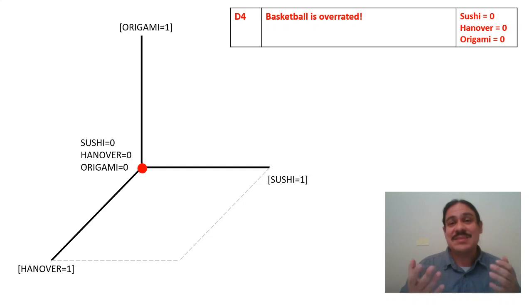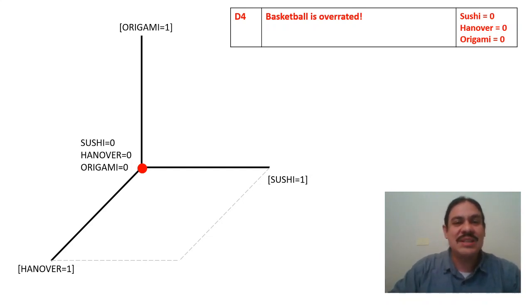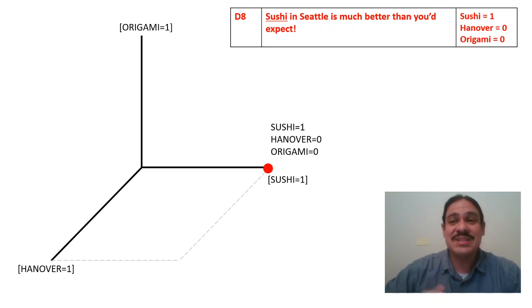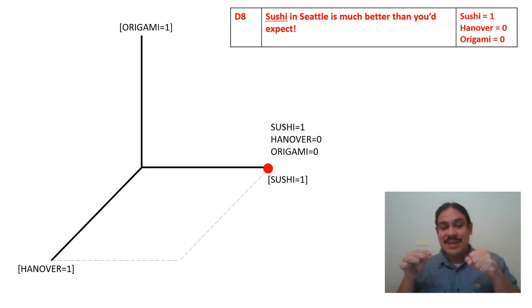Notice that I'm using three dimensions because that's as many as I can draw. In theory you could have four, 200, or many more dimensions mathematically — but I'll stick with this three-dimensional example for now. So D4 lives at the origin where all dimensions are zero. A document like D8 — 'Sushi in Seattle is much better than you'd expect' — has the word sushi, so its sushi dimension is one, and the other dimensions are zero. So in our three-dimensional system, it is one step along the sushi axis, with no steps in the Hanover or Origami axes.